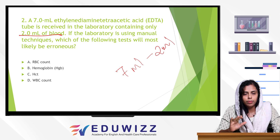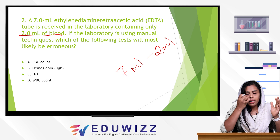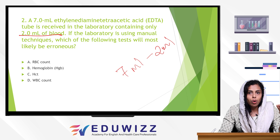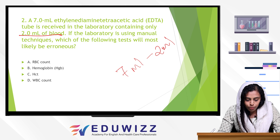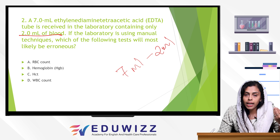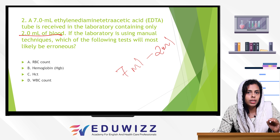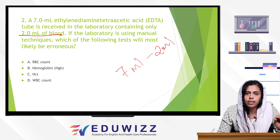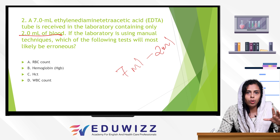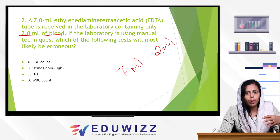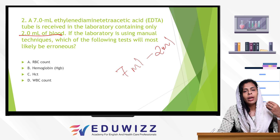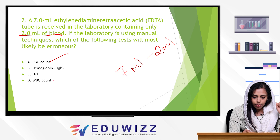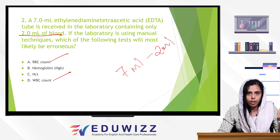If the laboratory is using a manual technique, which of the following tests will most likely be erroneous? The options are RBC count, hemoglobin, HCT, and WBC. The effects of excess EDTA: counts are normal because cells are shrunken or may undergo hemolysis, so counts remain normal. RBC count and WBC count are normal.